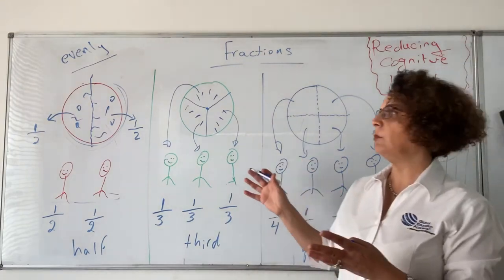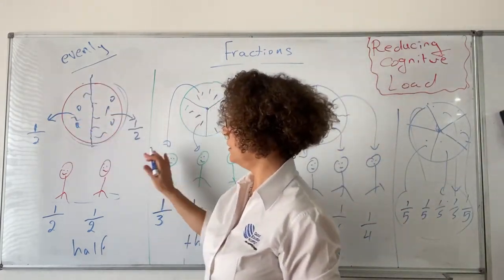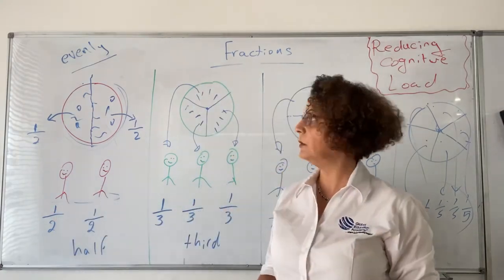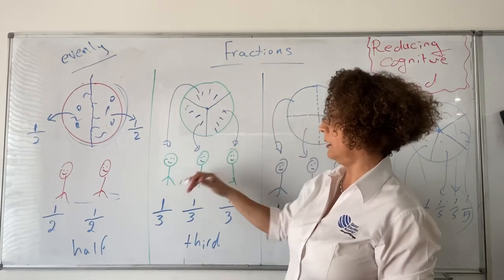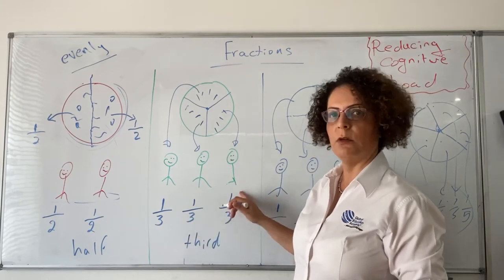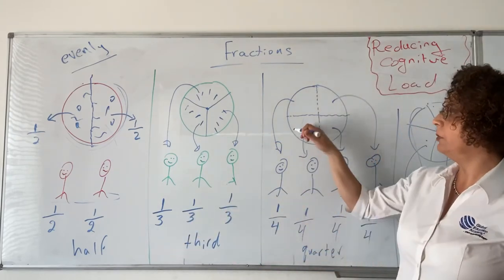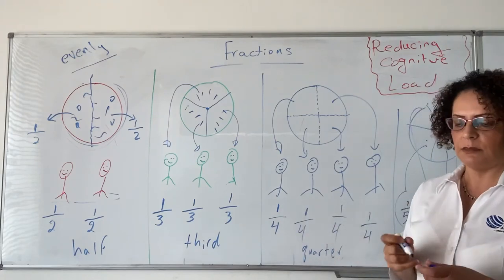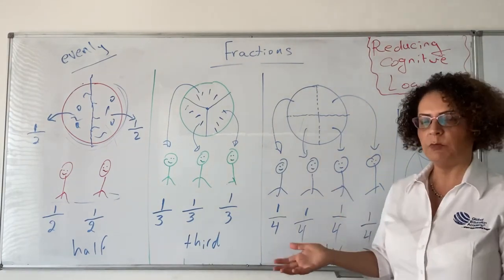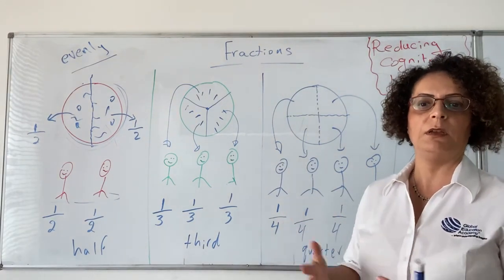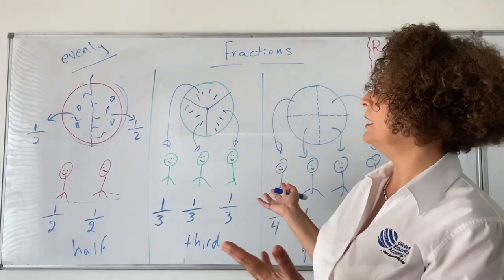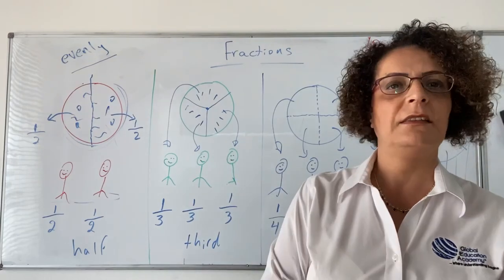So it's the same process. We have one thing to share with two people — each one will get one out of two, which is called half. Three people — each one gets one out of three, called a third. Four people — one out of four, that's the quarter. Five people — one over five. Six people — one over six. Seven people — one out of seven. So it's very simple, very easy, and really very visual to see how it works.